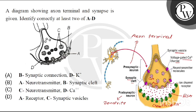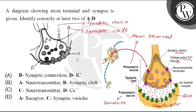Now let's see — what is C? You can clearly see what is in the axon terminal, so C is the synaptic vesicle. What is B? B is the synaptic cleft. What is A? A is the receptor. And D is the pre-synaptic membrane.